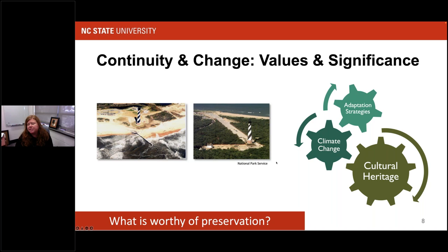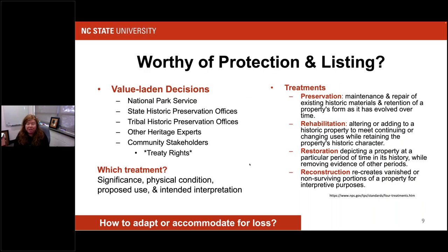Determining what's worthy of protection or listing on the National Register involves really valuated decisions. The National Park Service, State Historic Preservation Offices, Tribal Historic Preservation Offices, other heritage experts, and community stakeholders — particularly those associated communities that have treaty rights for lands that were ancestral properties — all have different opinions on how these decisions should be made. We need to recognize and acknowledge that those differences have different levels of priority and consideration.